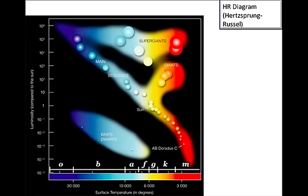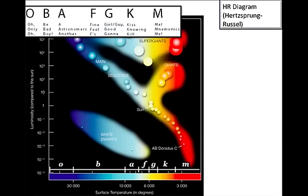The HR diagram represents the spectral class, the luminosity, the temperature, and the absolute magnitude of stars. Remember spectra of stars? There's a scale O-B-A-F-G-K-M, which can be remembered several ways.